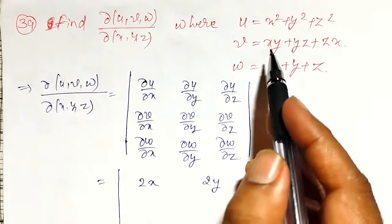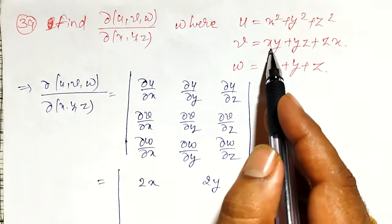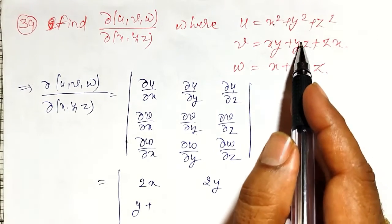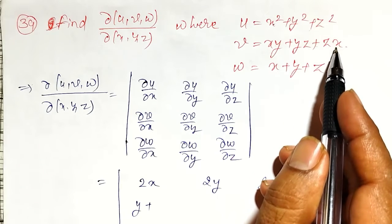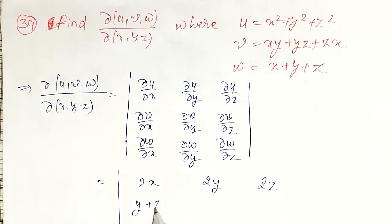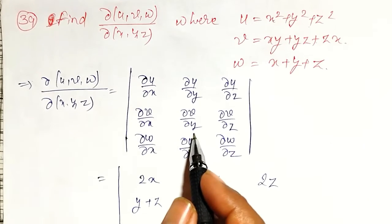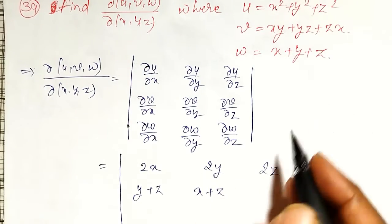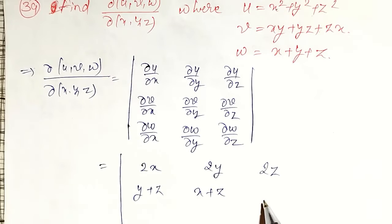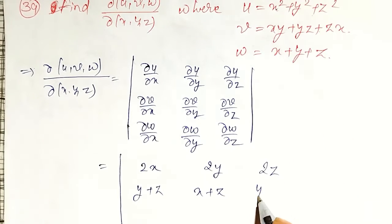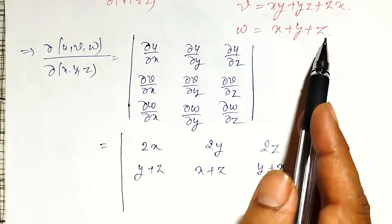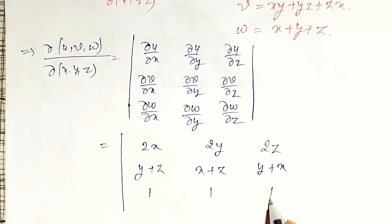For v = xy + yz + zx, the partial derivative with respect to x gives y + z. With respect to y, v gives x + z. With respect to z, v gives y + x. For w = x + y + z, the partial derivatives with respect to x, y, and z are all 1, 1, 1.